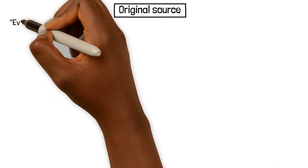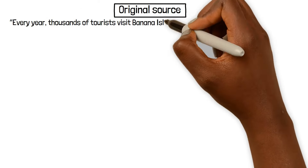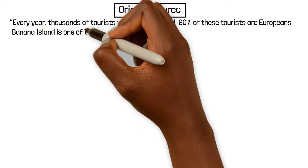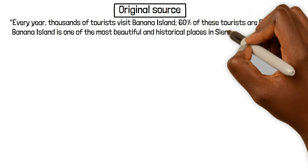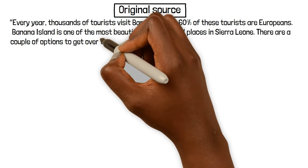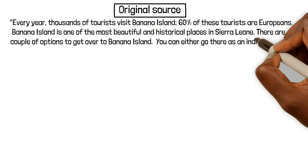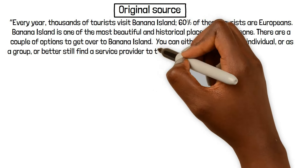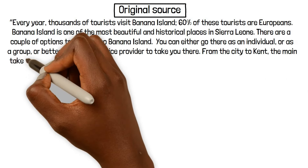Here is an example. Every year, thousands of tourists visit Banana Island. Sixty percent of these tourists are Europeans. Banana Island is one of the most beautiful and historical places in Sierra Leone. There are a couple of options to get over to Banana Island. You can either go there as an individual or as a group, or better still find a service provider to take you there.